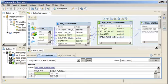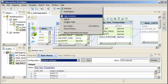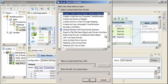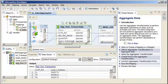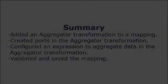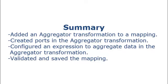Informatica Developer includes a cheat sheet that explains how to aggregate data. Click Help, Cheat Sheets, and select the cheat sheet called Aggregate Data. That completes this demo. To summarize, we added an aggregator transformation to an existing mapping, created ports in the aggregator transformation, configured an expression to aggregate data in the aggregator transformation, and validated and saved the mapping.